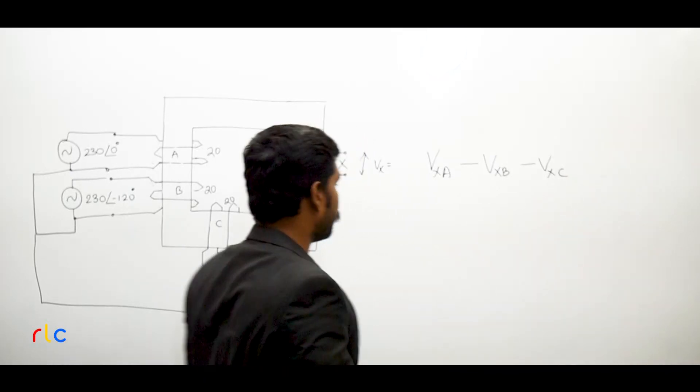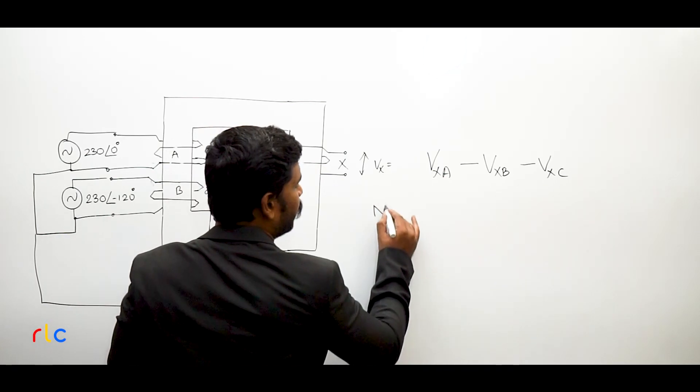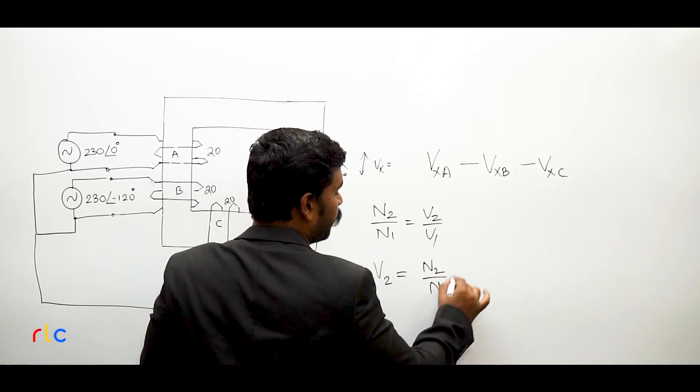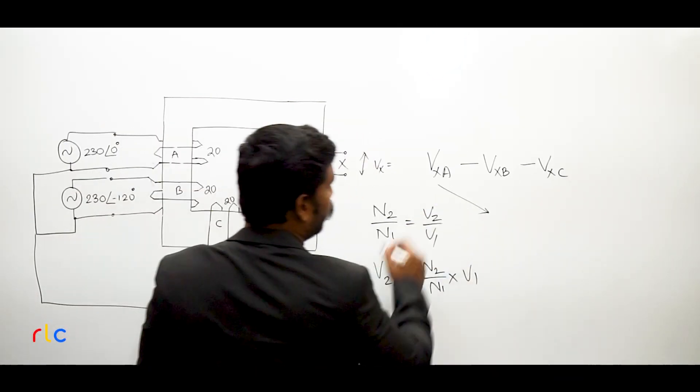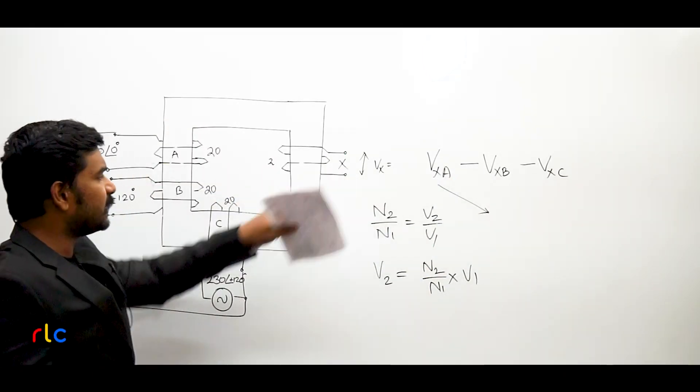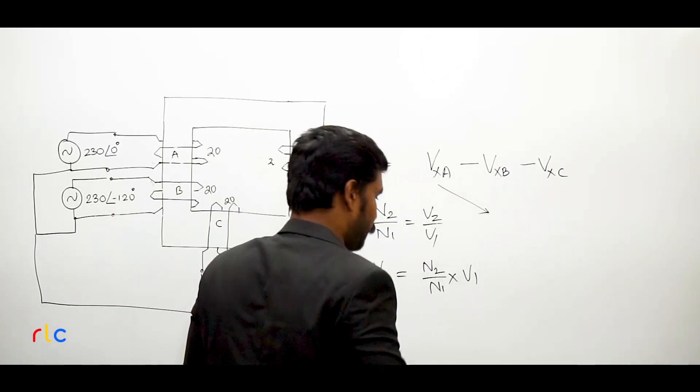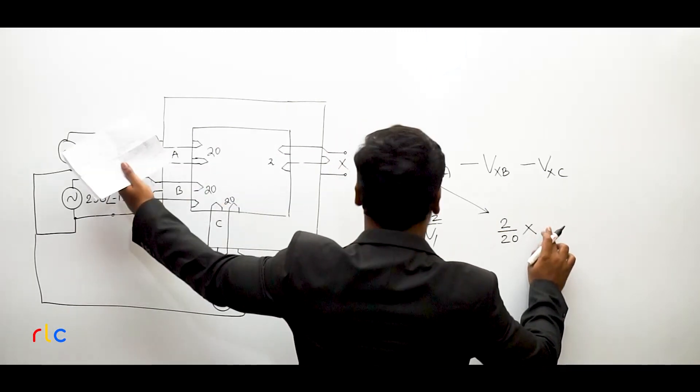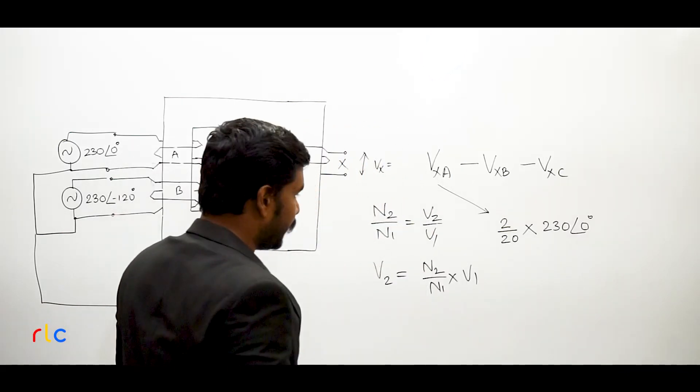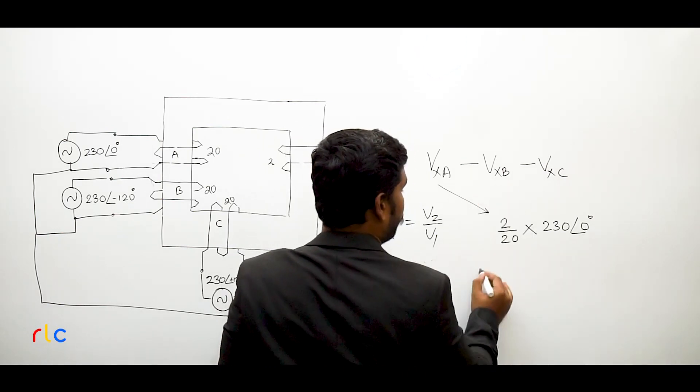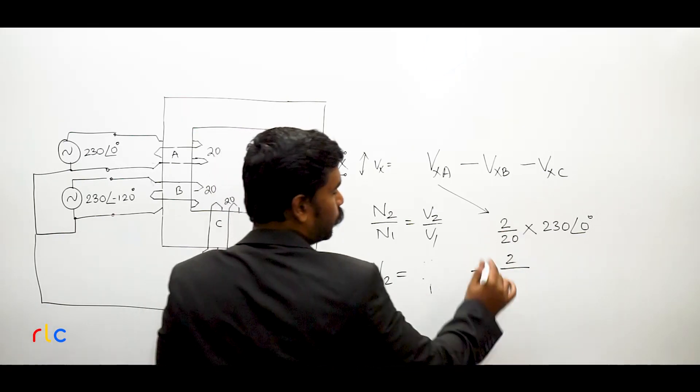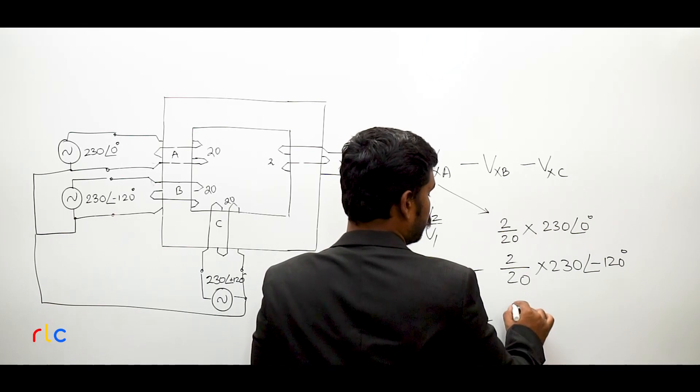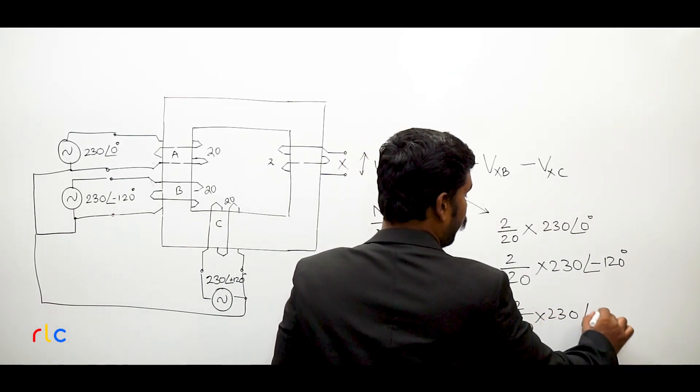Now what is VXA, VXB, and VXC? From the transformer principle, N2 by N1 equals V2 by V1. If you want to find secondary voltage V2, it's turns ratio N2 by N1 into primary voltage. VXA with respect to A: secondary is X with 2 turns divided by primary side 20 turns into what is the primary side voltage, 230 volts at angle 0 degrees. That is VXA. Similarly for VXB, minus 2 by 20 into 230 at minus 120 degrees angle. Similarly, minus 2 by 20 into 230 at angle plus 120 degrees.